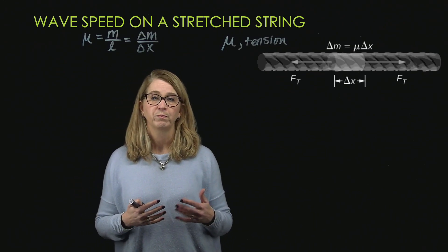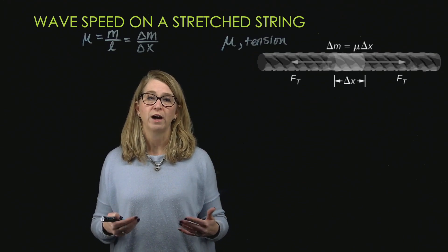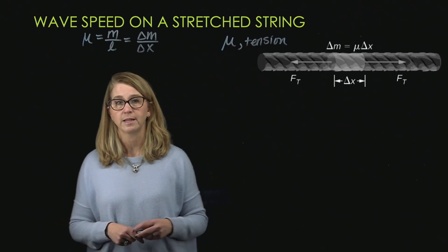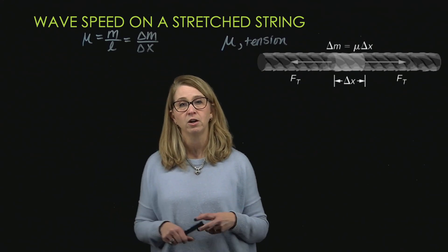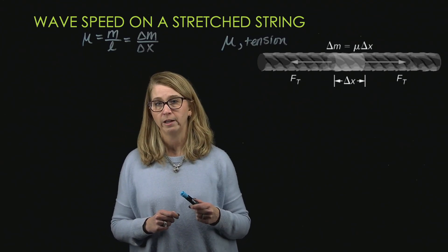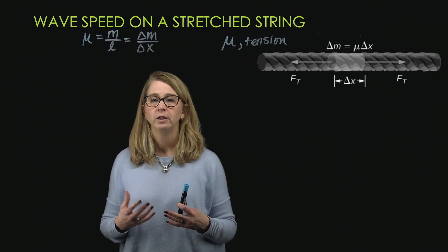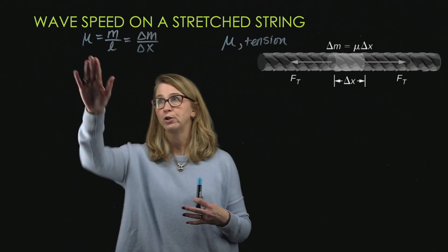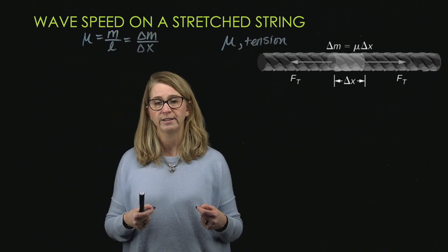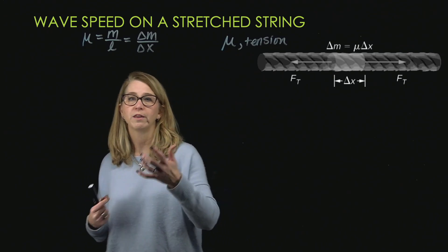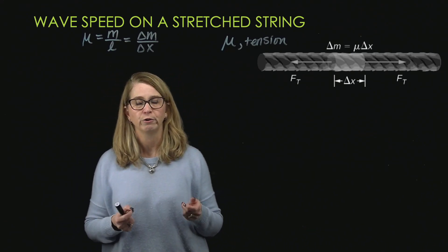Those clues are telling us some of the things that are going to affect the way that a wave will travel through those guitar strings and make a sound. The two things we're talking about — the thickness of the strings and how tight they are — are the mass per unit length and the tension. We use the Greek letter mu to represent the linear density of the string, which is the mass per unit length. If we take a small increment of the length delta x, that gives us a small increment of mass delta m.